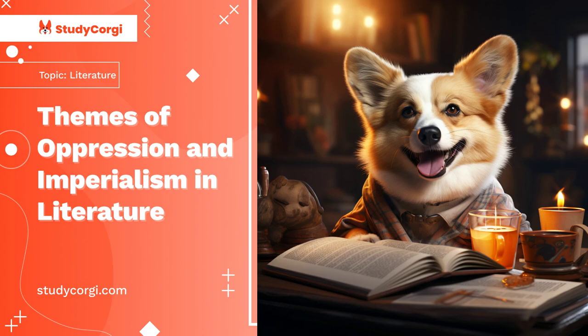Oppression and imperialism can be seen in the way Marlow describes the natives. For example, while traveling through the river, Marlow says: "It was unearthly, and the men were — no, they were not inhuman. Well, you know, that was the worst of it, the suspicion of their not being inhuman." He describes the natives as something inhumane, although he feels a connection with them. Later on in this novel, they attack the ship with crossbows, which is their way of protesting against the Europeans conquering their land.